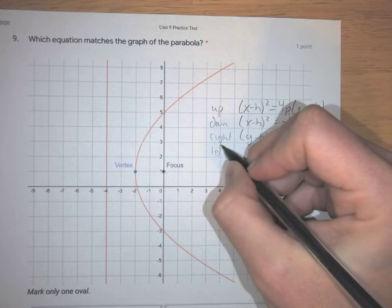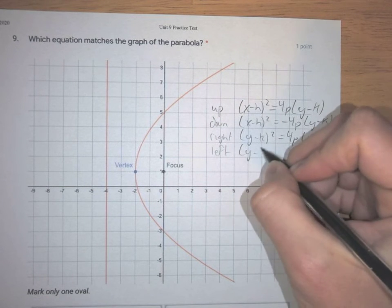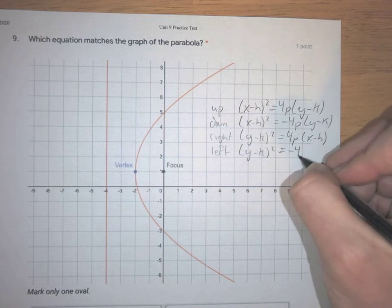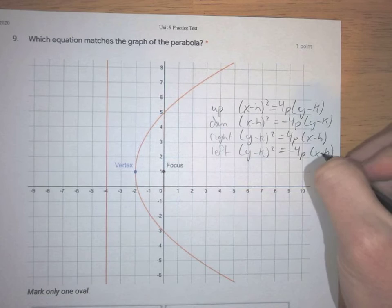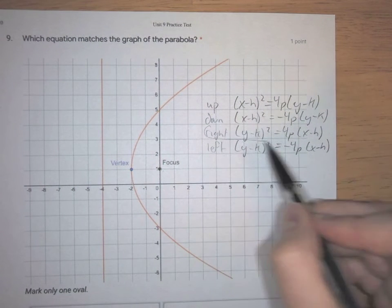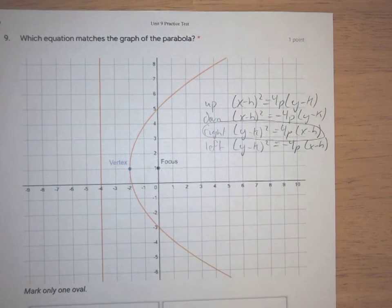And we have our left version, which is (y-k)² = -4p(x-h). This one obviously opens to the right, so this is the template that we want to use.